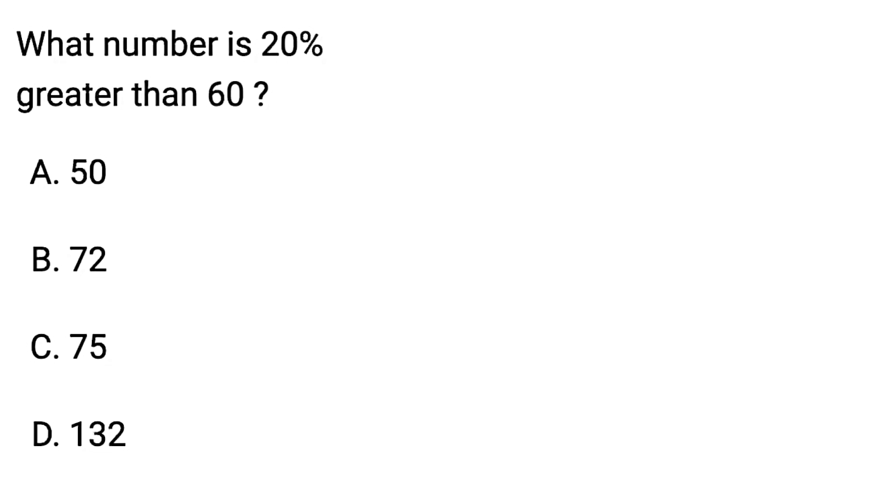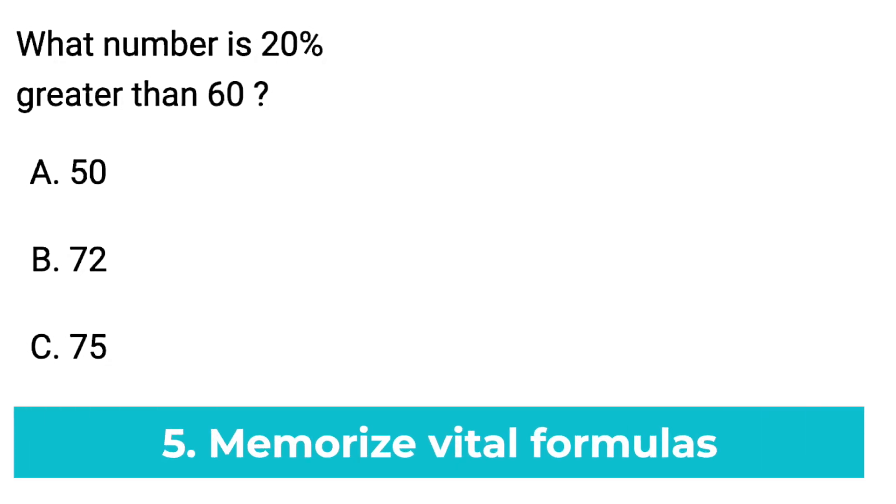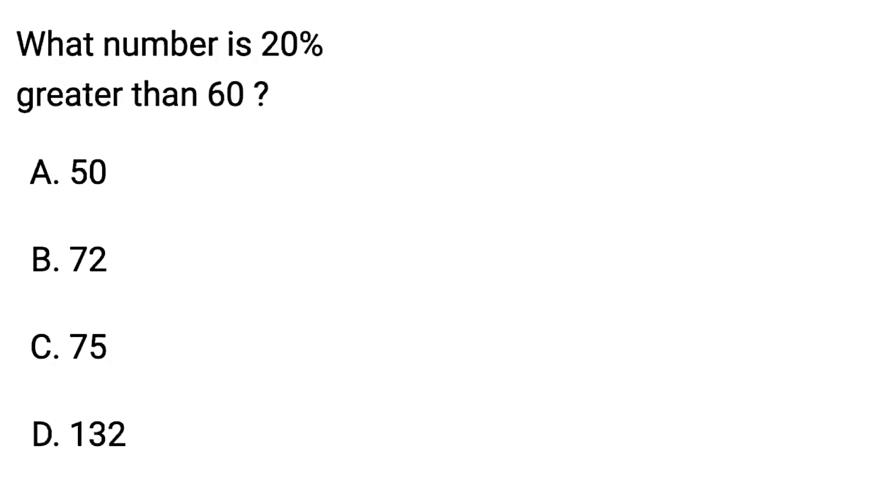That cheat sheet is super helpful, but my last tip is actually to memorize vital formulas that are not included on that cheat sheet. These are normally going to be non-geometry formulas. I'm talking about things like negative b over 2a, the quadratic formula, the mean formula. Anything like this is really good to have memorized, or something like how to add percent.